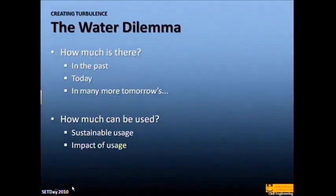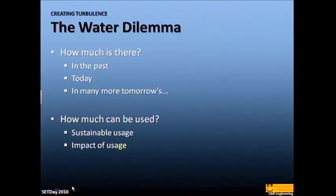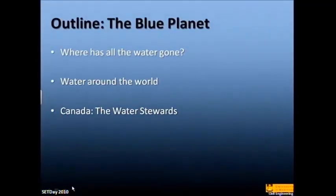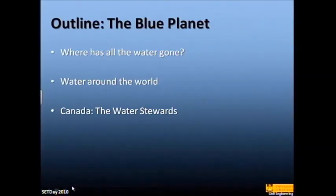So the dilemma, now that I've scared you all. We have to know how much water there is — it's not just a pollution problem. We need to know how much we can safely use, whether for industry or for drinking. We have to know where the water's coming from, how much has been there in the past, how much is there today, and how much there's going to be in the future. We also need to know how much we can sustainably use and the impact of any usage we choose to implement.